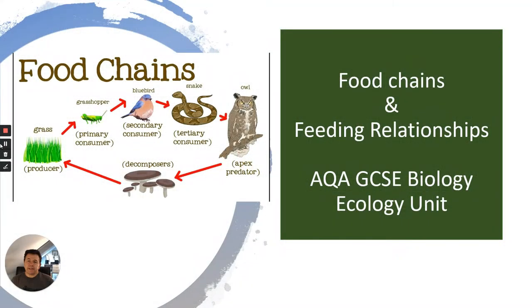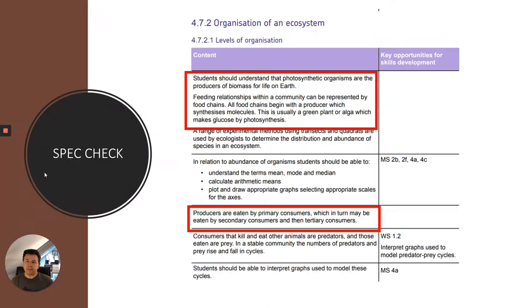This is a quick video on food chains and feeding relationships, related to your ecology unit of work. A quick spec check: today we are going to be looking at feeding relationships within a community, represented as food chains, the different stages of food chains and what they show us, and then we'll talk about the interdependence of species in terms of food webs.